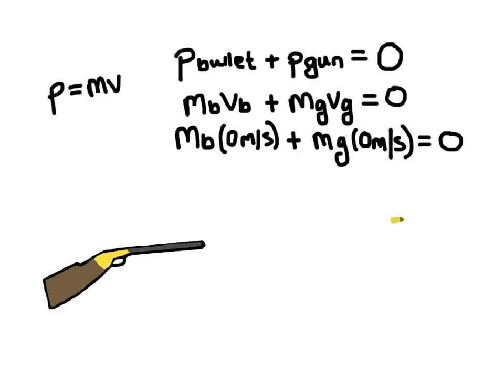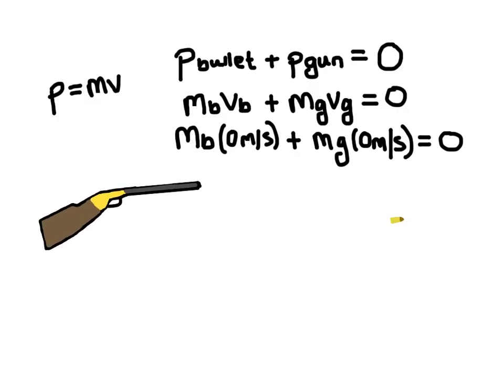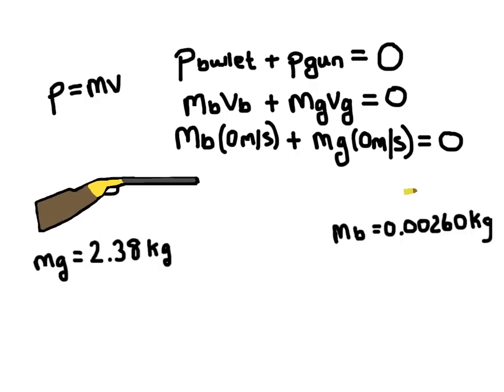Well, let's add some masses to the bullet and the gun. The average rifle weighs about 2.38 kilograms, and the bullet weighs about 0.0026 kilograms, in other words 2.6 grams. Now a bullet can travel at some pretty great velocities. Let's say that our bullet is traveling at 378 meters per second.